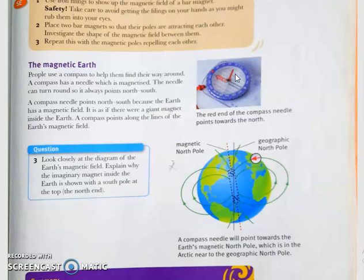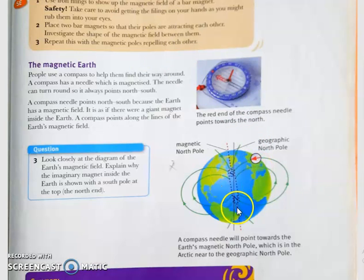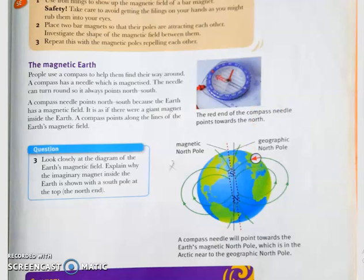When we suspend a free magnet it will always point in a north-south direction, because inside the Earth there is a gigantic magnet made up of several metals. The Earth is rotating, and due to this continuous rotation a magnetic field is generated. The direction of the Earth's magnetic field is in the south-north direction internally.